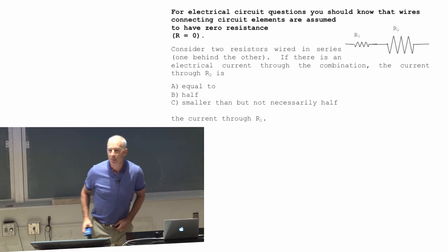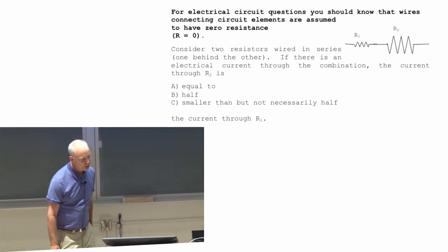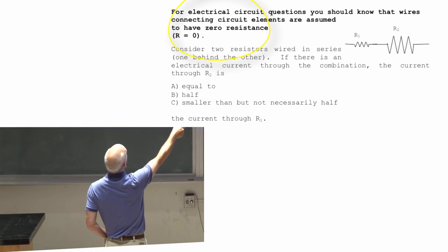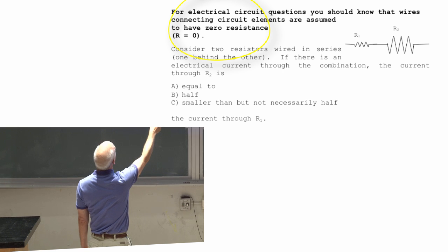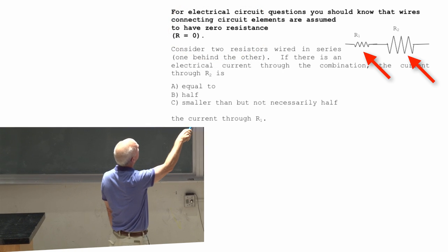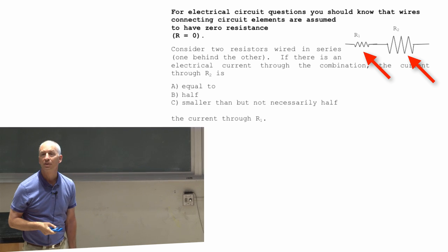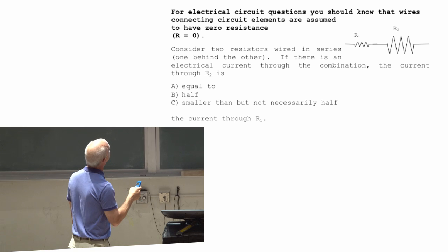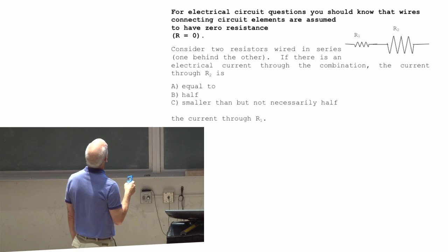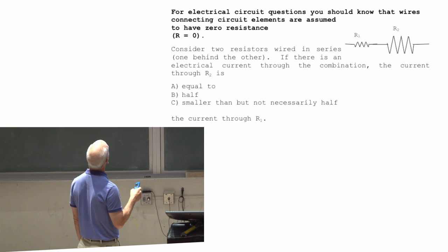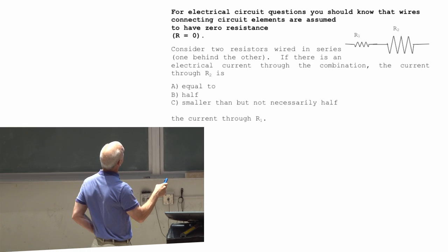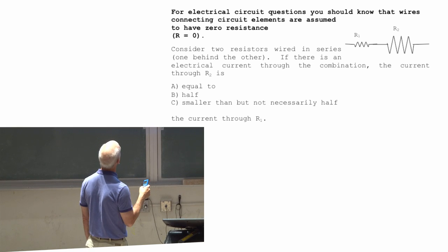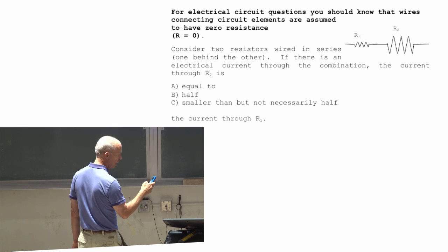I got at least a couple of questions for you. First one that starts with a reminder up here at the top. We assume these bare wires have zero resistance and only the things that are the squiggly lines are resistors, so have resistance. So these are two resistors wired in series. It turns out that the name for this is series. If there's an electrical current through the combination, the current through R2, that's a big resistor, is A equal to B half C smaller than, but not necessarily half, the current through R1.